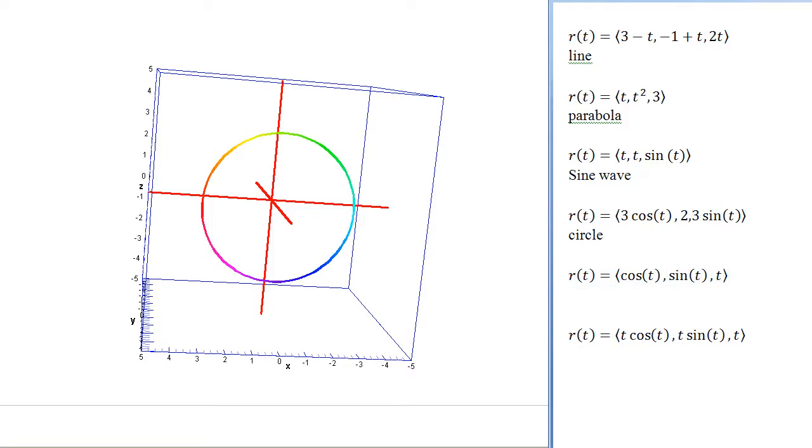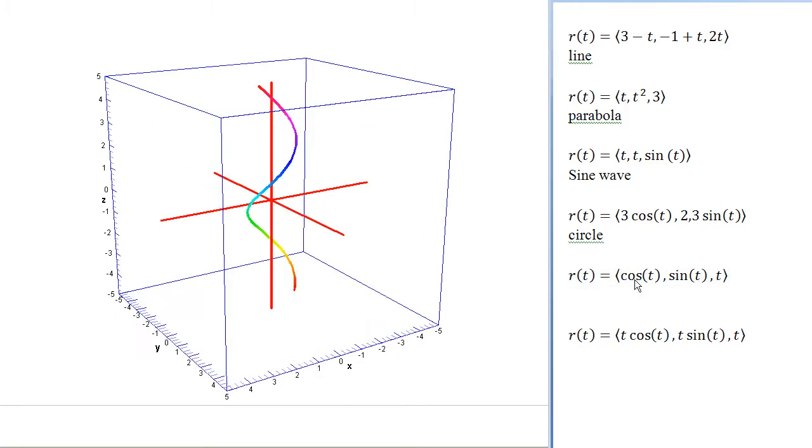Okay, next one. So with this next curve, we're getting rotation again in x and y from the cosine-sine pair. Meanwhile, the z value, instead of being constant, is increasing.